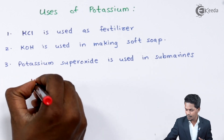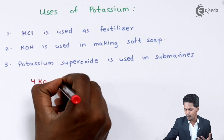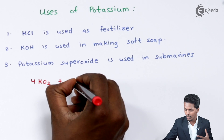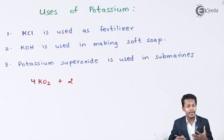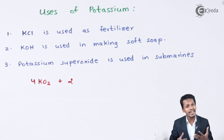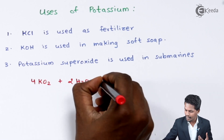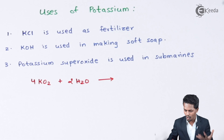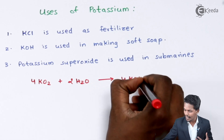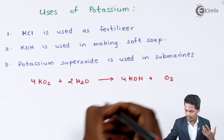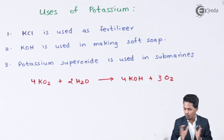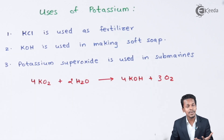When potassium superoxide (KO₂) reacts with moisture present during breathing — which contains H₂O — two moles of H₂O react with potassium superoxide to form four moles of KOH along with three moles of oxygen. This oxygen is then consumed by the person traveling through the submarine.